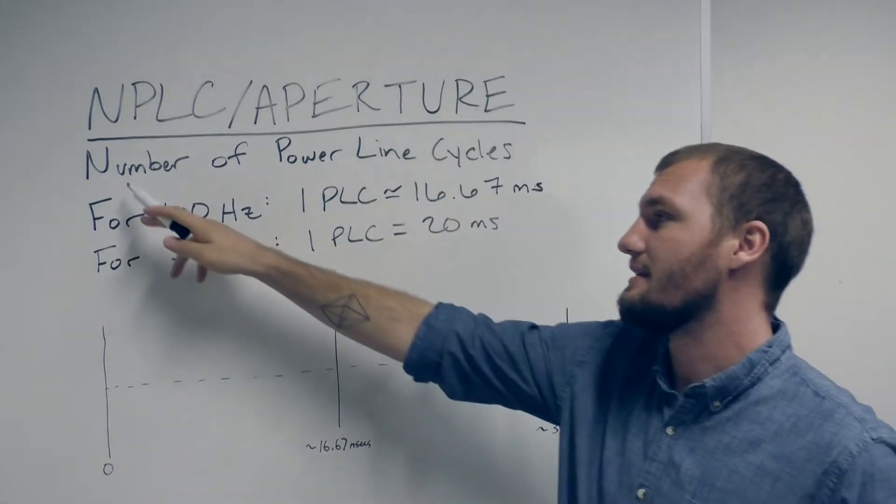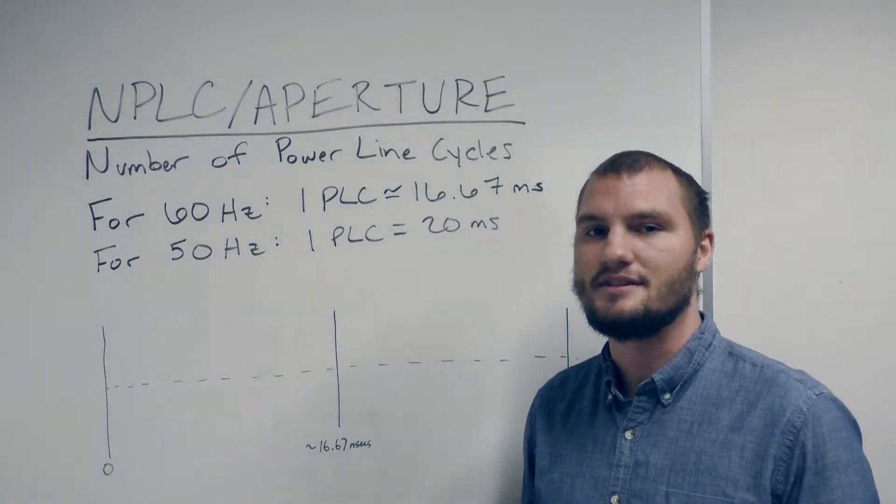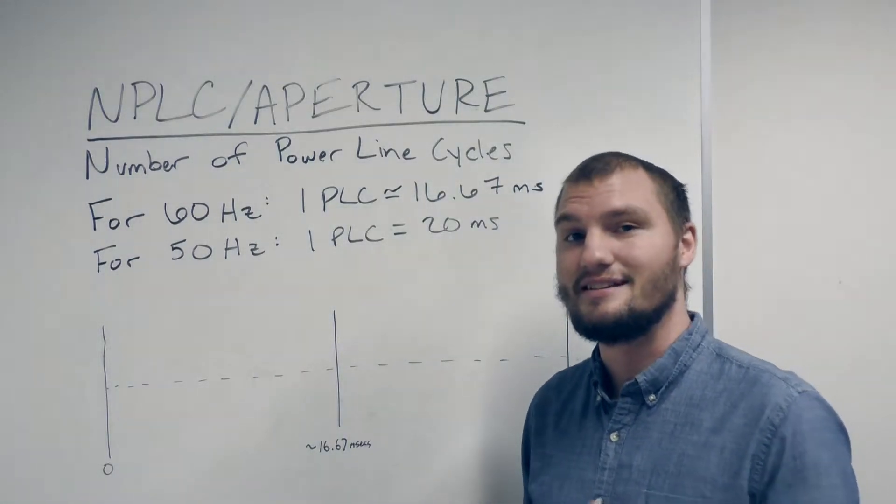This means the number of power line cycles and it describes the amount of time that an input signal is integrated in order to get a single measurement.